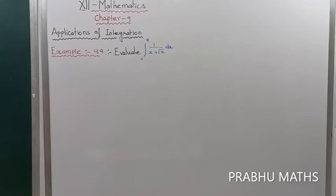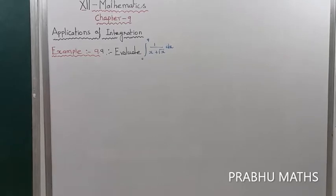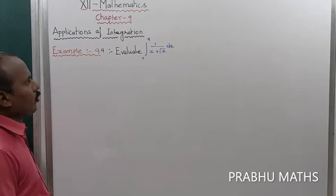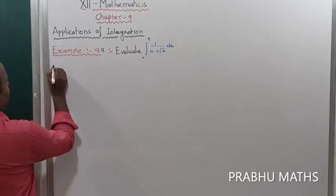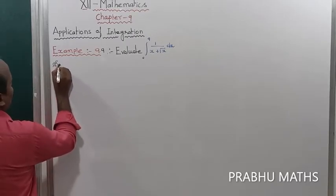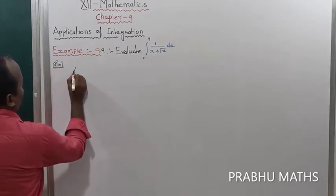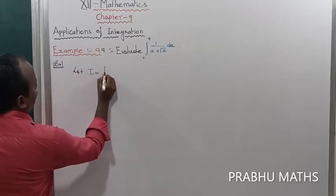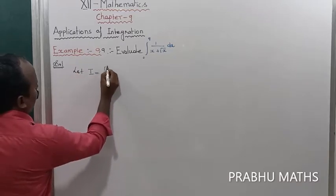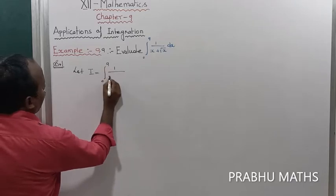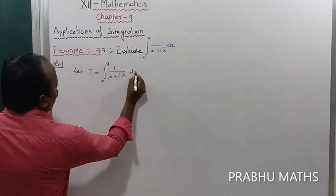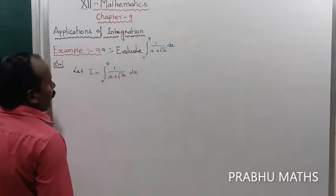Example 9.9: Evaluate the integral from 0 to 9 of 1 divided by (x plus root x) dx. The given value, let us consider I, that is equal to the integral from 0 to 9 of 1 divided by (x plus root x) dx.